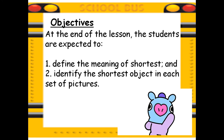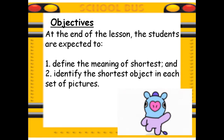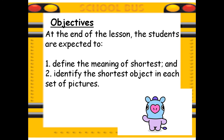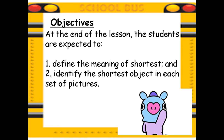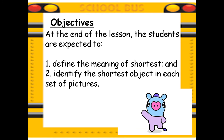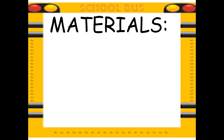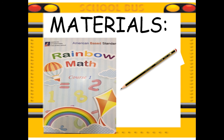At the end of this lesson, you students are expected to define the meaning of shortest, and identify the shortest object in each set of pictures. Okay, KGs, are you ready? Please bring out your rainbow math book as well as your pencils. If you are ready, let's proceed on with our lesson.